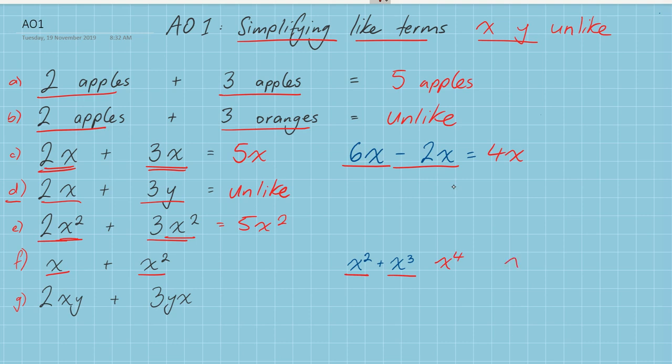This doesn't apply though when you're dealing with X and a half X. These are like terms. It only applies when you're dealing with exponentials, like X squared, X cubed, X to the power of four. So in this case, I can't add X and X squared. I have to simply leave them as they are, because they are unlike.